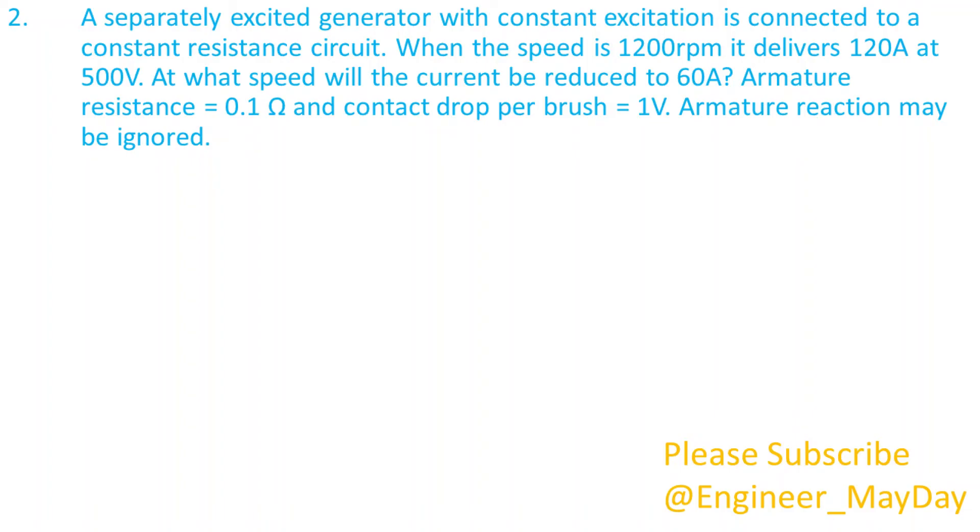Here is a second question. A separately excited generator with constant excitation is connected to a constant resistance circuit. When the speed is 1200 RPM it delivers 120 amperes at 500 volts. At what speed will the current be reduced to 60 amperes? Armature resistance equals 0.1 ohms and contact drop per brush equals 1 volt. Armature reaction may be ignored.